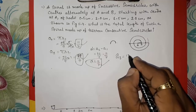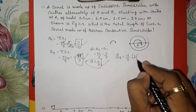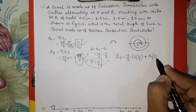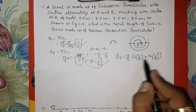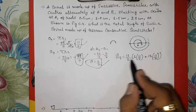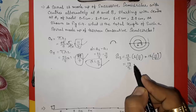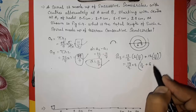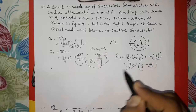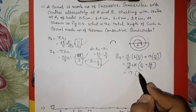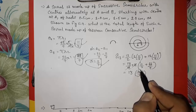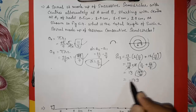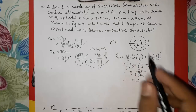Continuing the S₁₃ calculation: S₁₃ = (13/2)[22/7 + 132/7]. Taking 2 common from numerator and cancelling with 2 in denominator: = 13 × [11/7 + 66/7] = 13 × 77/7 = 13 × 11 = 143. So the total length of the spiral made up of 13 consecutive semicircles is 143 cm.